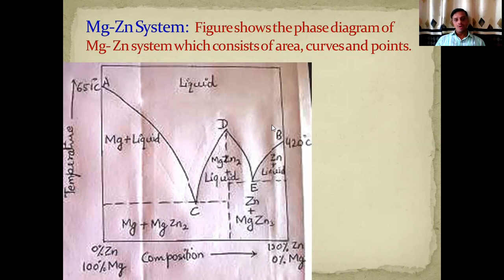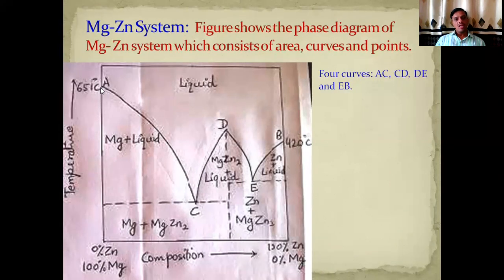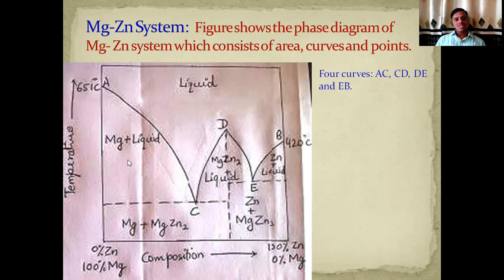First of all, this phase diagram consists of four curves, namely curve AC, curve CD, curve DE, and curve EB. To explain each curve, you have to consider various phases in the phase diagram.